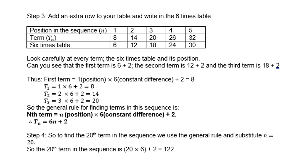Step 4: To find the 20th term in the sequence, we use the general rule and substitute n equals 20. So put 20 into n, it will be 6 times 20 plus 2. So that term therefore is 122.